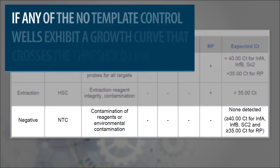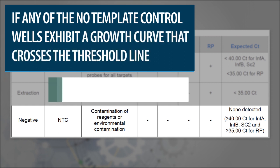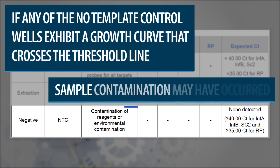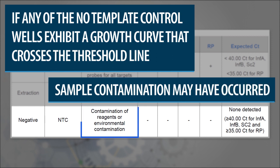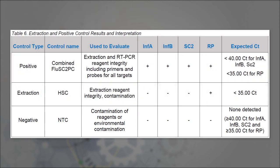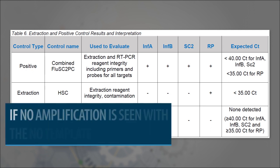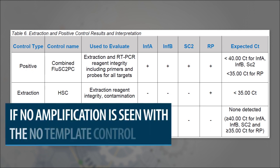The No-Template Control wells should not exhibit fluorescent growth curves that cross the threshold line. If any of the No-Template Control wells exhibit a growth curve that crosses the threshold line, sample contamination may have occurred. Invalidate the run and repeat the assay with strict adherence to the guidelines.